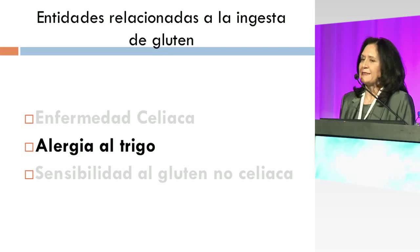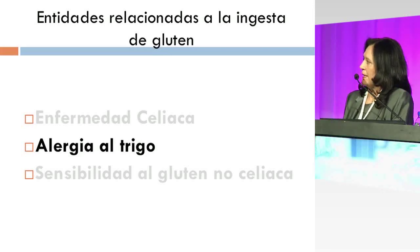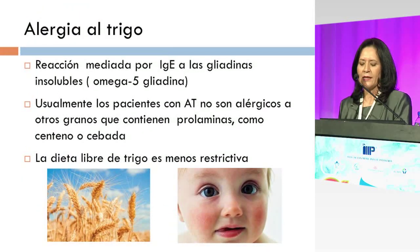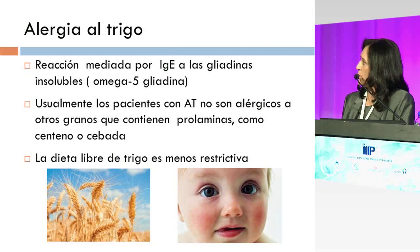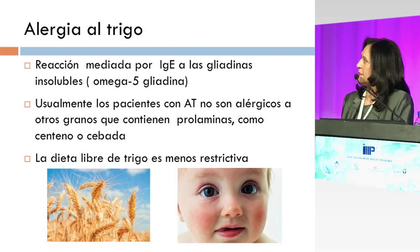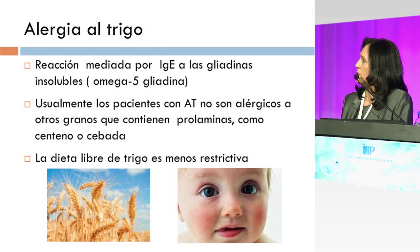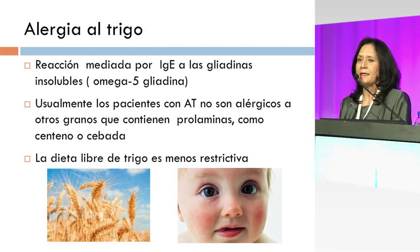La siguiente entidad que se relaciona a la ingesta de gluten es la alergia al trigo. Esta alergia es una reacción mediada inmunológicamente por la inmunoglobulina E a las gliadinas insolubles —omega 5 gliadina— y usualmente los pacientes con alergia al trigo no son alérgicos a otros de los granos que comentábamos, como la cebada o el centeno. En estos pacientes la dieta es menos restrictiva porque solamente necesitamos retirar el trigo de la dieta, ni la cebada, ni el centeno, ni la avena.